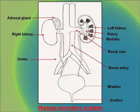This diagram shows the human excretory system. In the diagram, you can see the left kidney, right kidney, adrenal gland, ureter, renal vein, renal artery, bladder and the urethra. In the left kidney, parts of the kidney like the pelvis and the medulla are also shown.